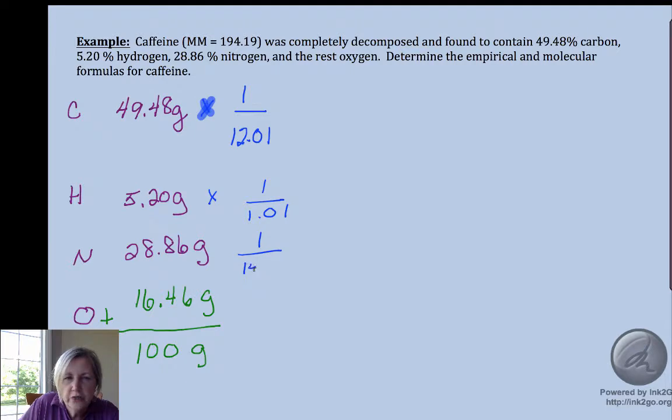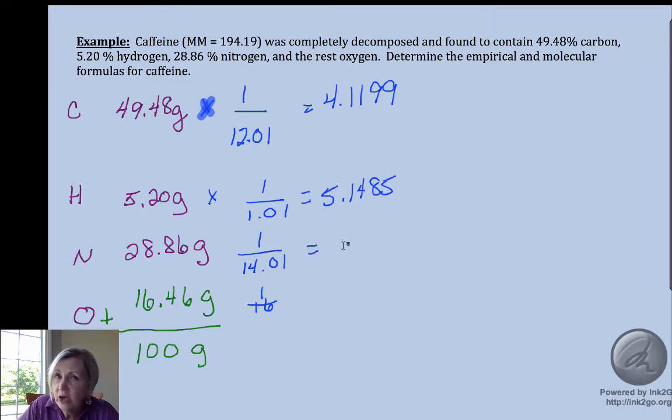Nitrogen is 14.01, oxygen is 16. And so for carbon I get 4.1199. Don't round, carry it out at least four. I carried five. You want to carry four or five. If you don't, when you divide, you may think you have to multiply to get a whole number and you don't, or vice versa. It may look like it can be multiplied. Okay, now I want to show you a common mistake that I see here.